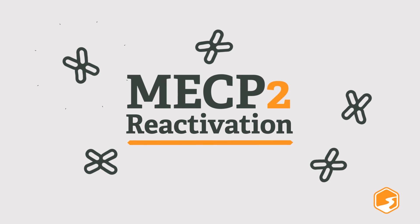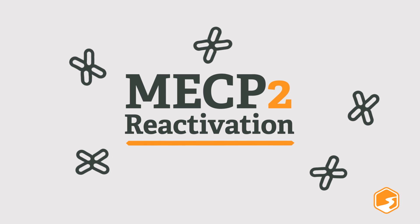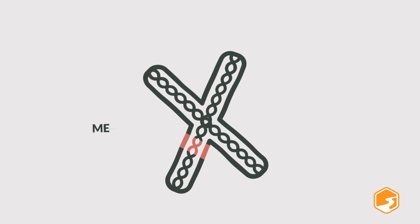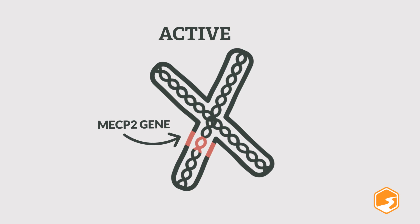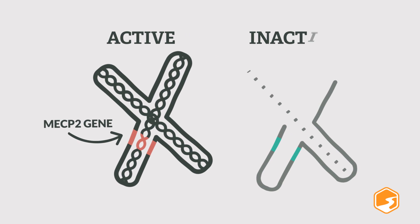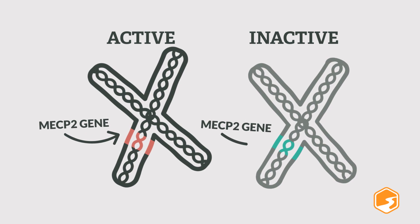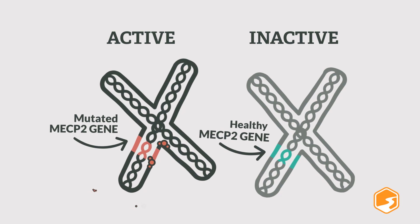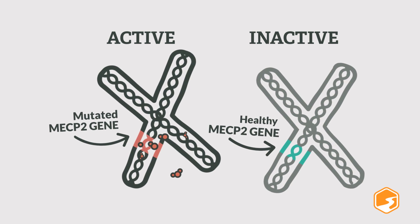But let's take a step back and review MECP2 reactivation. Girls with Rett have two copies of the MECP2 gene, one on the active X chromosome and the other on the inactive X chromosome. In every cell where the mutated gene is active and making defective protein, there is a healthy but dormant copy of the gene on the inactive X chromosome.